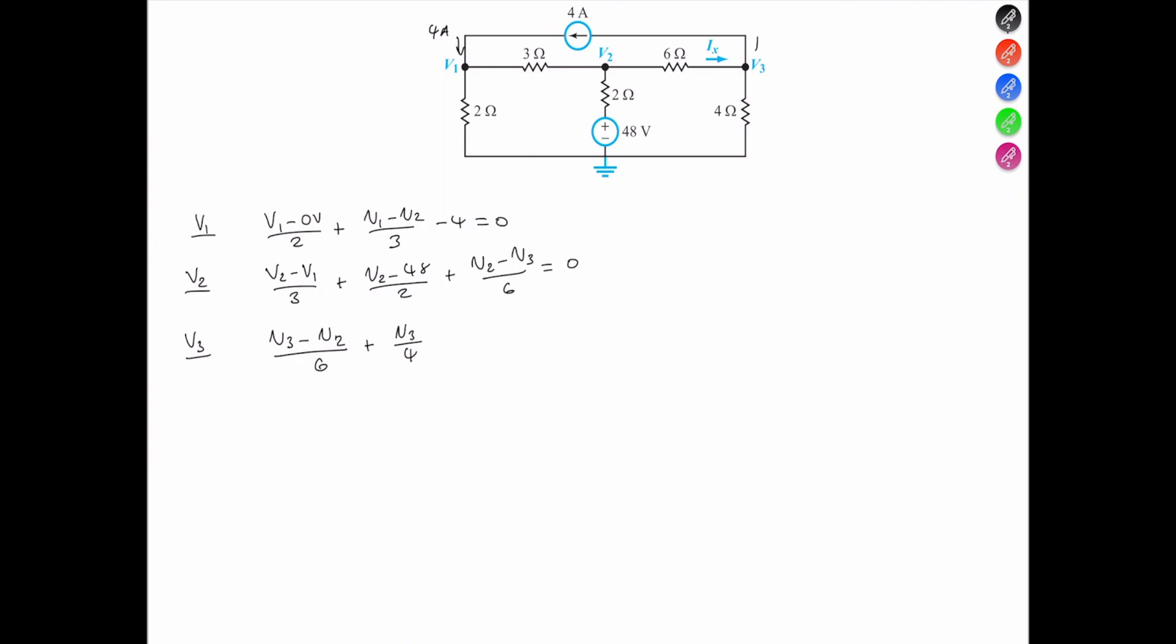Now, we see that the 4-amp current left V3, so a current leaving a branch or a node, a current leaving a node is positive, so that's positive 4 amps, equals 0.